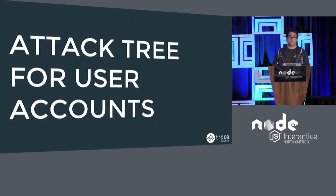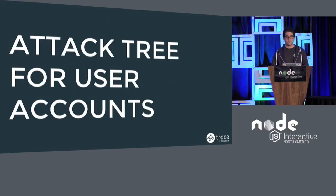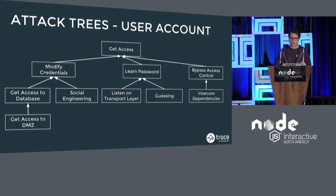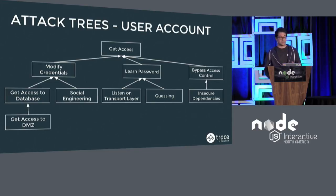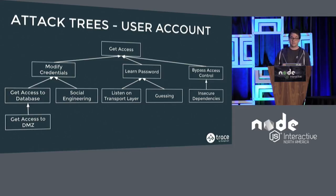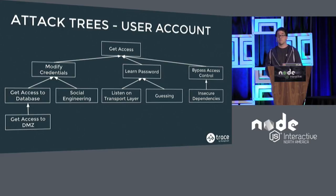The next thing, which will be a little bit more complex example for attack trees, is about how an attacker could get access to a user account. The attacker could get access by either modifying the credentials in the database — to do that he either has to get access to the database or use social engineering — or to get access to the database, learn the password either by listening on the transport layer, guessing it, or bypass access control by exposing some kind of insecure dependency.